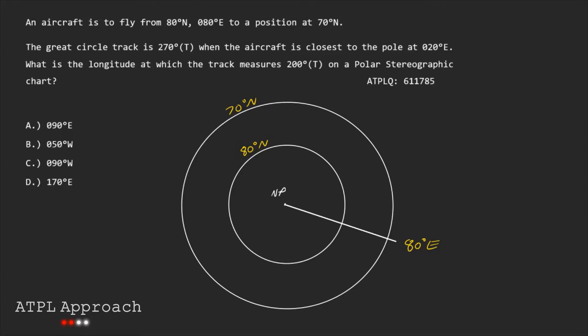Okay then so what do I draw next? Well that's pretty much all I can draw from this statement. I know that from this position here I'm going to somehow go and intersect this latitude over there. So then we look at the next statement here which tells us that the great circle track is 270 degrees true when the aircraft is closest to the pole at 20 degrees east. So how do we actually use this fact that the aircraft is closest to the pole to work out which way the aircraft is going? Well if you're flying along in let's say this direction here you see that we'll get to 20 degrees east there. However we'll be closer about here.